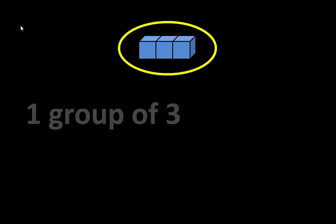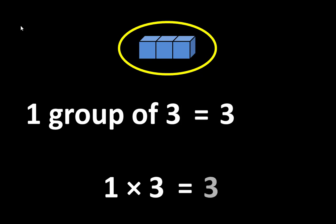Here is a group of three. There is one group of three. According to the Identity Property of Multiplication, one group of three is equal to three, or one times three is equal to three.